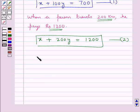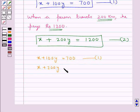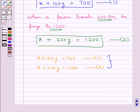So we get two equations: x plus 100y is equal to Rs. 700 — this is equation 1 — and x plus 200y is equal to Rs. 1200 — this is equation 2. Now we will solve both these equations for the values of x and y. To solve these two equations, we subtract equation 1 from equation 2.